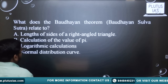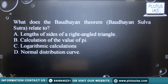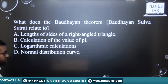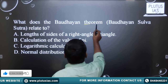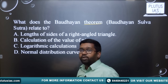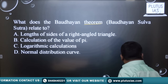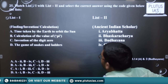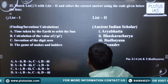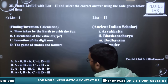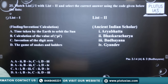The options for the Baudhayana theorem are: the length of the sides of a right angle triangle, calculation of the value of pi, logarithm calculations, or normal distributive crop. The question is asking to what the Baudhayana theorem is related. This was also from the prelims examination. Another question is a match list — List 1 is findings, inventions and calculations; List 2 is ancient Indian scholars.